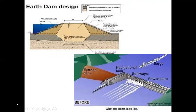This is the earth dam design, showing the cross-sectional area of an earth dam. This is the middle part of the dam. A cut-off trench is provided to control seepage from the upstream side. This is the downstream side and this is the upstream side of the earth dam. Here is the water storage level of the earth dam.